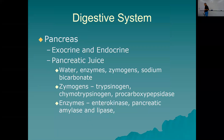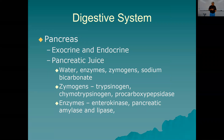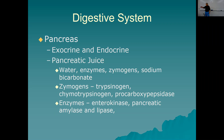The pancreas is both an exocrine and endocrine gland. The exocrine portion has ducts and makes pancreatic juice. The endocrine portion consists of the islets of Langerhans, which make insulin and glucagon. Let's look at the exocrine portion — pancreatic juice.